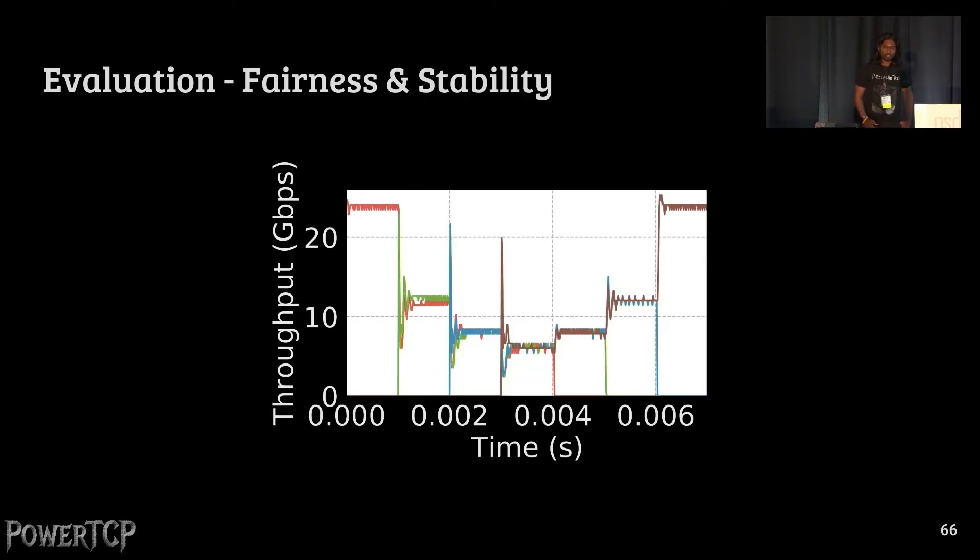We also evaluated PowerTCP's fairness and stability properties. Here, on the x-axis, we show time, and on the y-axis is throughput per flow. This is a standard experiment with four flows arriving at one millisecond intervals. All the flows share the common bottleneck bandwidth, and flows depart at one millisecond intervals. As we see, PowerTCP is both fair and stable.